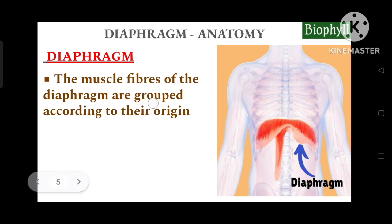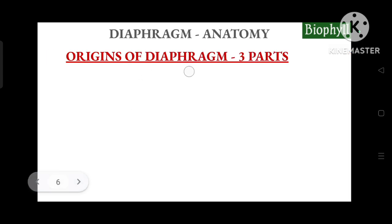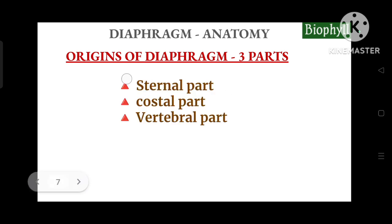We group the origin of the diaphragm into three parts. The diaphragm's origin is a little bit complicated, but in this video we will keep it very simple and useful. The three parts are: the sternal part, the costal part, and the vertebral part.